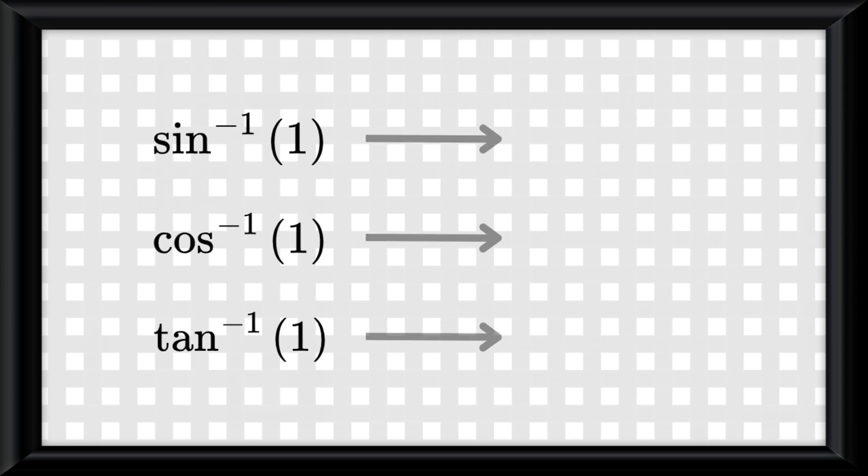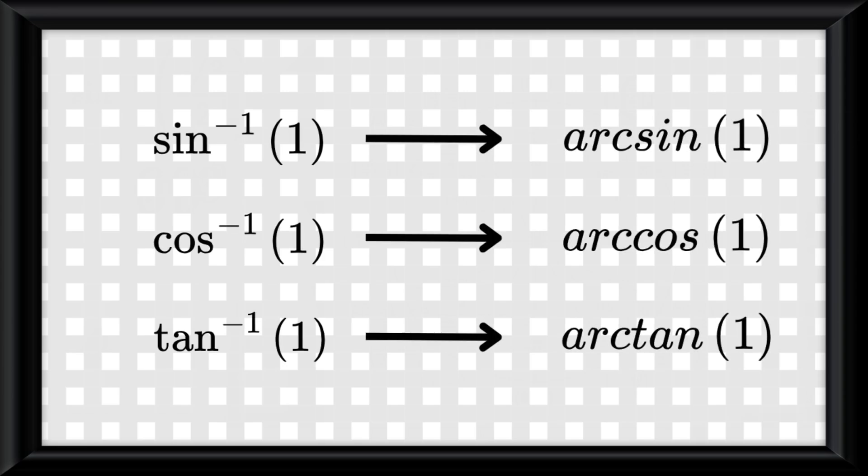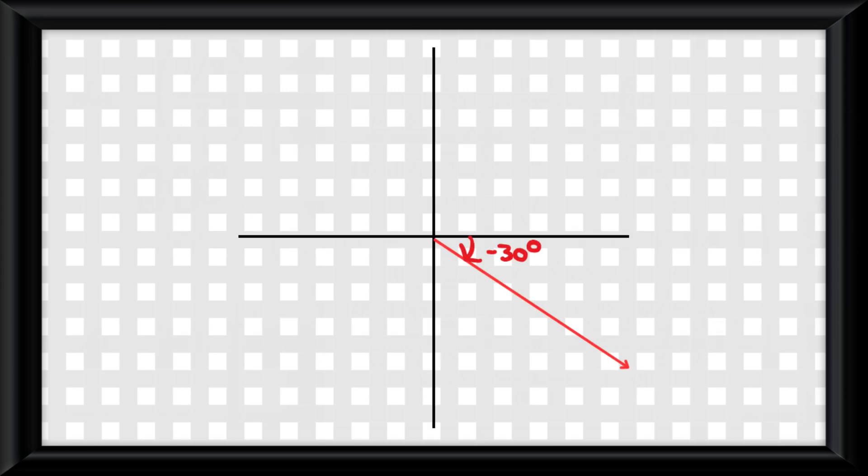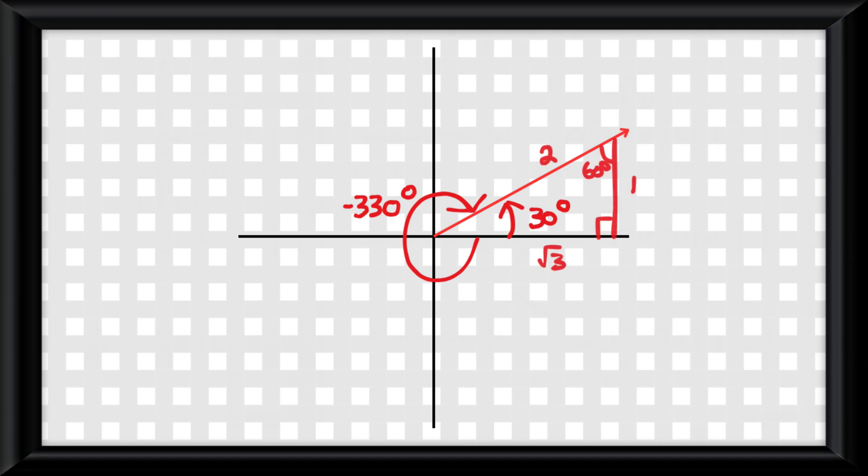Another way to notate inverse function is using arc notation. Just know it means the same exact thing. Angles can also be negative by going clockwise instead of counterclockwise. So 30 degrees is equal to negative 330 degrees. You would still solve the sine, cosine, and tangent of them the same way.